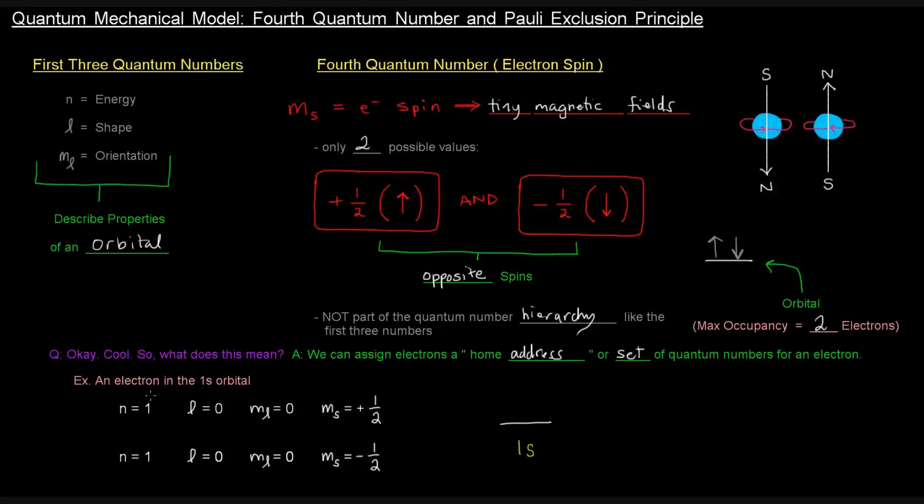So we could basically assign and kind of say where an electron is in terms of these quantum numbers. So if we're thinking about an electron in the 1s orbital, so this is a 1s orbital here, it can have two electrons in it. So if we have one electron with the quantum numbers, n equals 1, l equals 0, so that's where the 1s comes from.